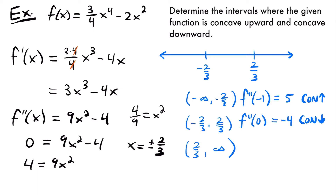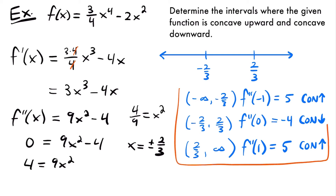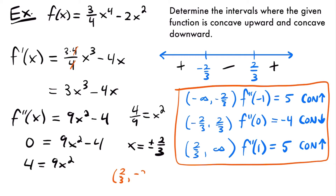Finally, for the last interval from 2 thirds to infinity, I'll pick 1. F double prime of 1 equals 1 squared times 9 minus 4, which is 9 minus 4, or positive 5, a positive value, meaning our function is concave up on that interval. Notice that at negative 2 thirds and 2 thirds the concavity is changing: concave up, then concave down, then concave up again. So both are inflection points. Plugging positive 2 thirds and negative 2 thirds into the function gives inflection points at 2 thirds comma negative 20 over 27 and negative 2 thirds comma negative 20 over 27.